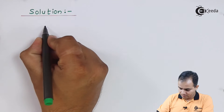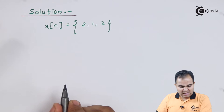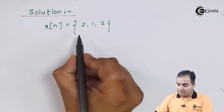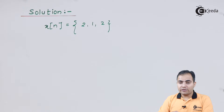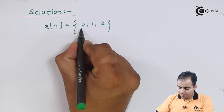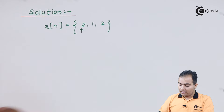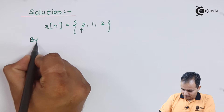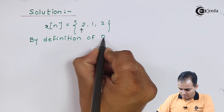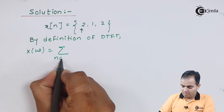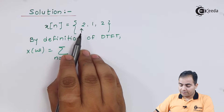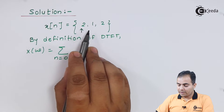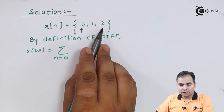In this question the origin value indicator is absent, so we'll assume the leftmost value is the origin value. Now I will apply the definition of DTFT — that is, the discrete time Fourier transform. The sample values start from n=0 and we have a total of three samples, so n varies from 0 up to 2.